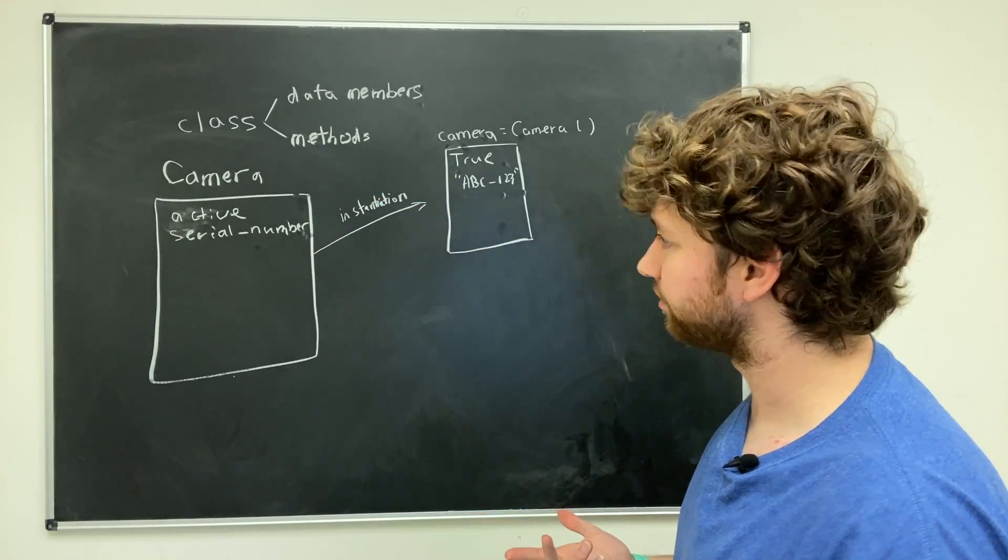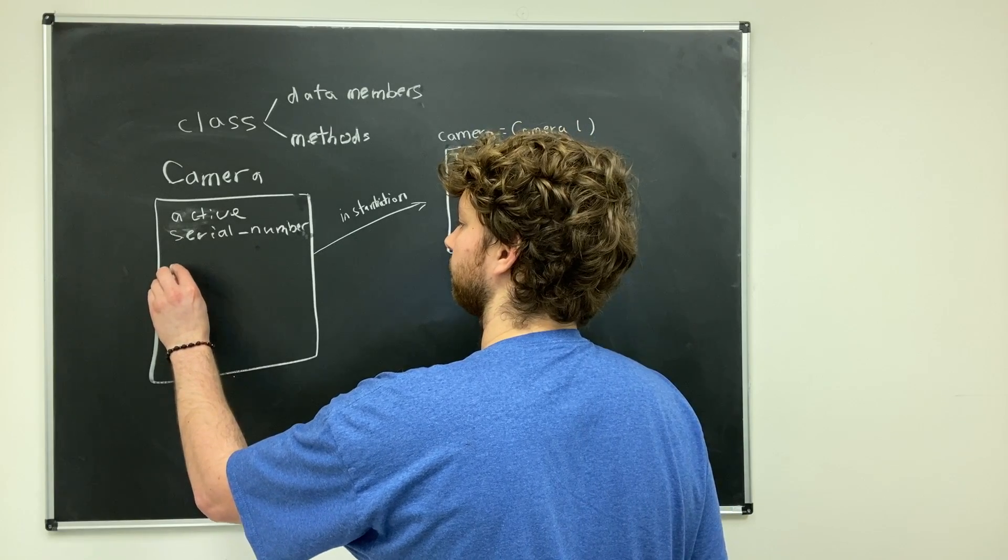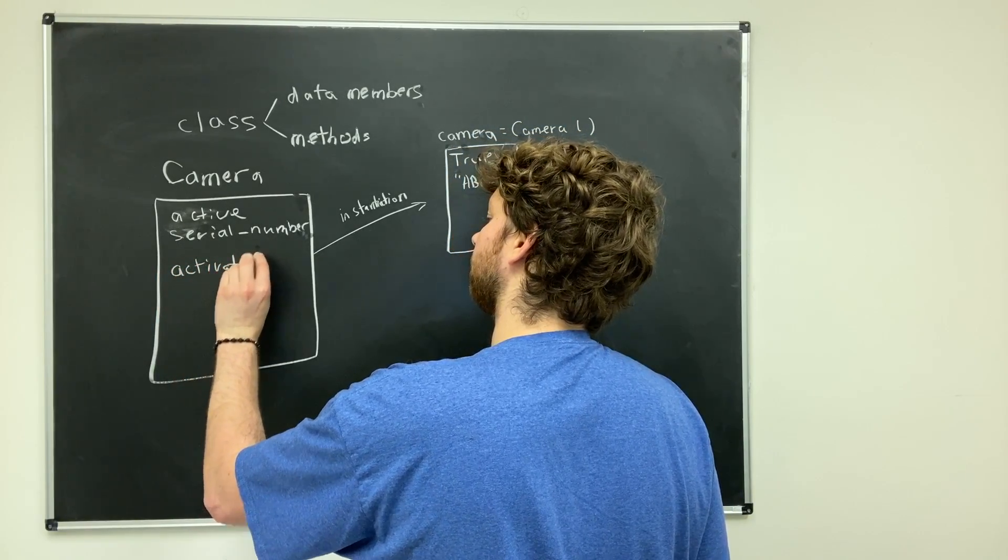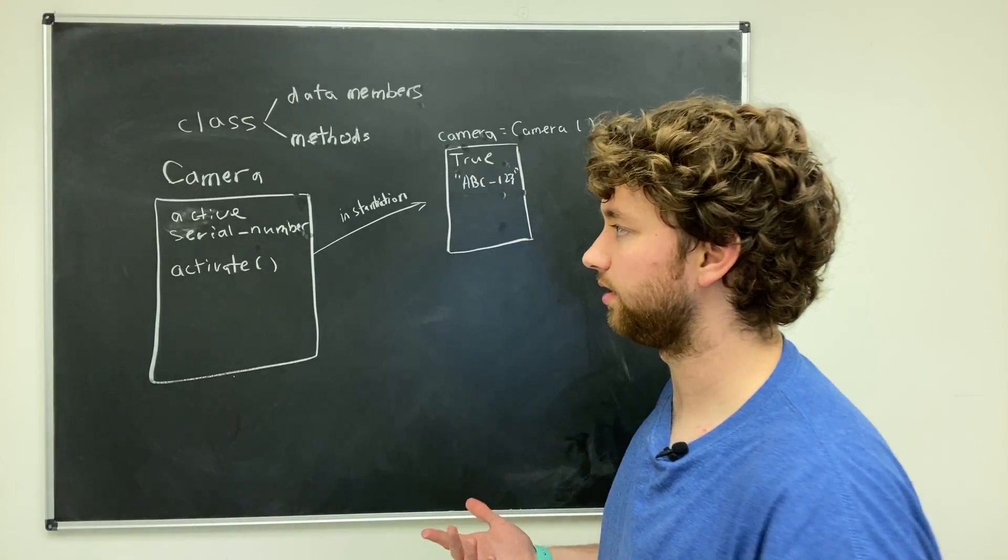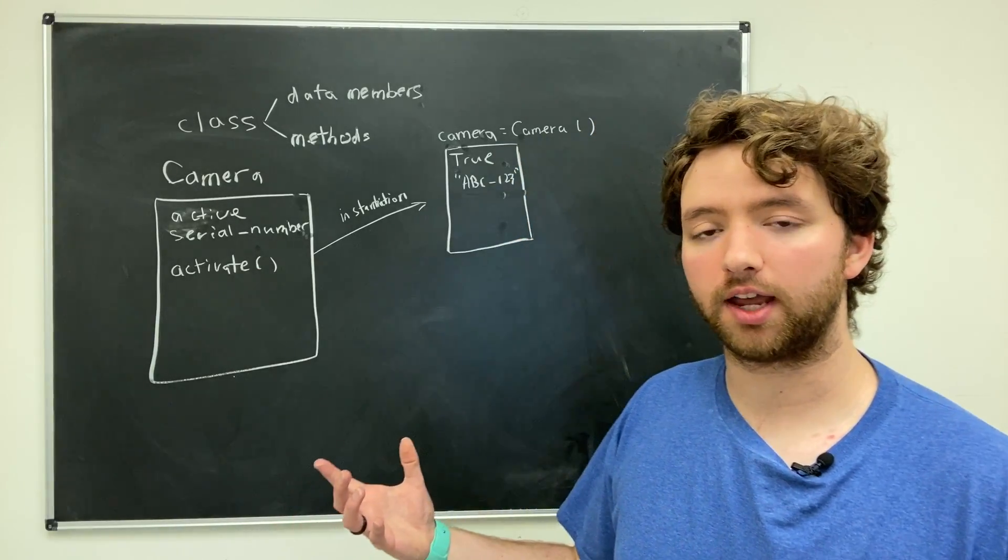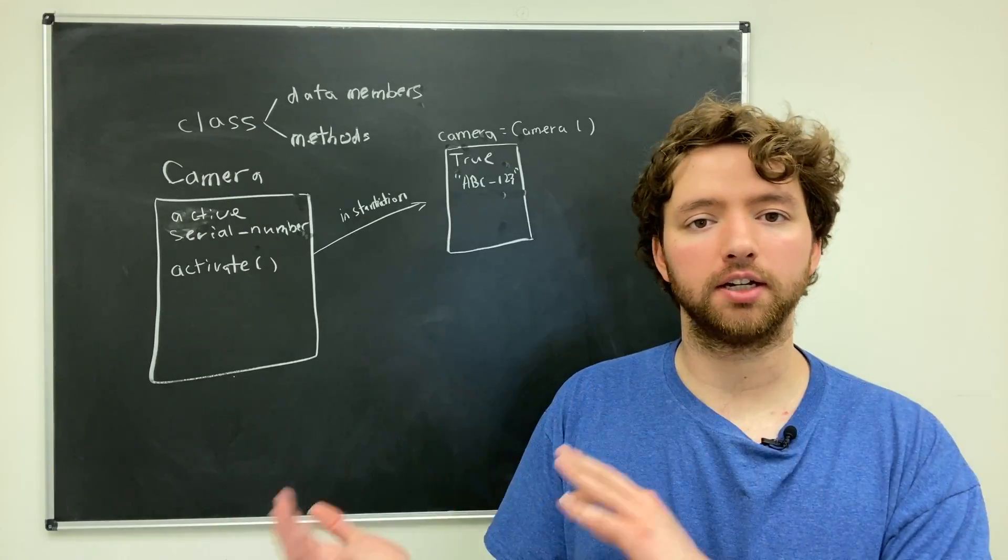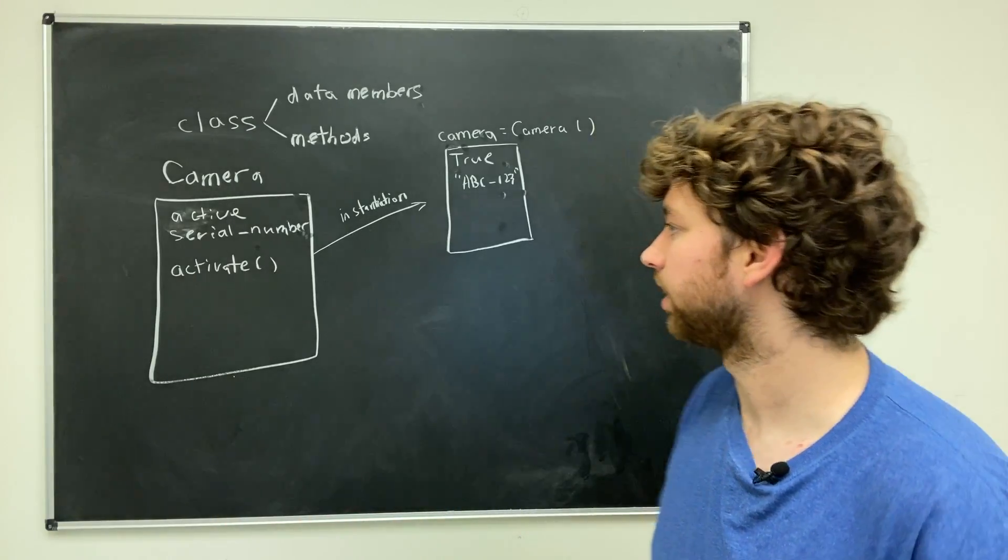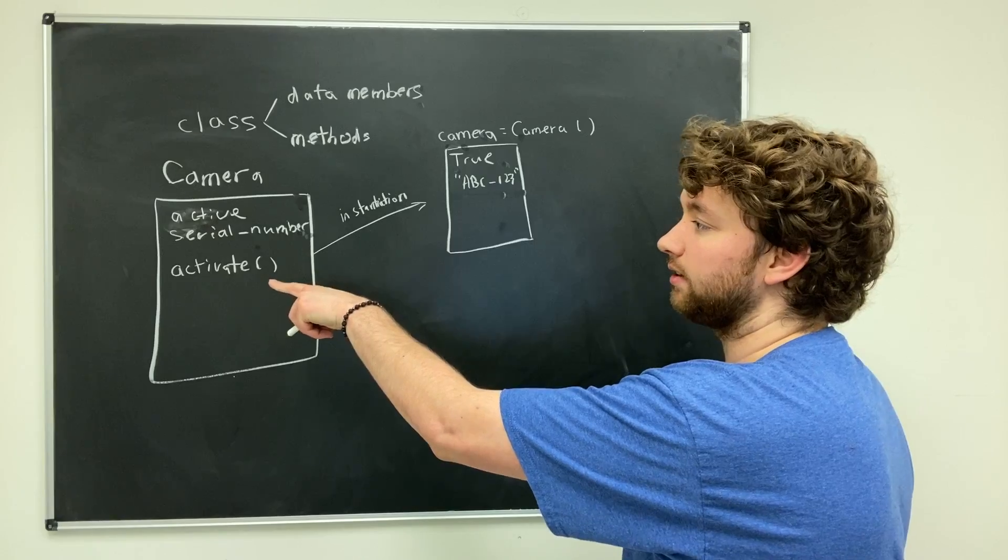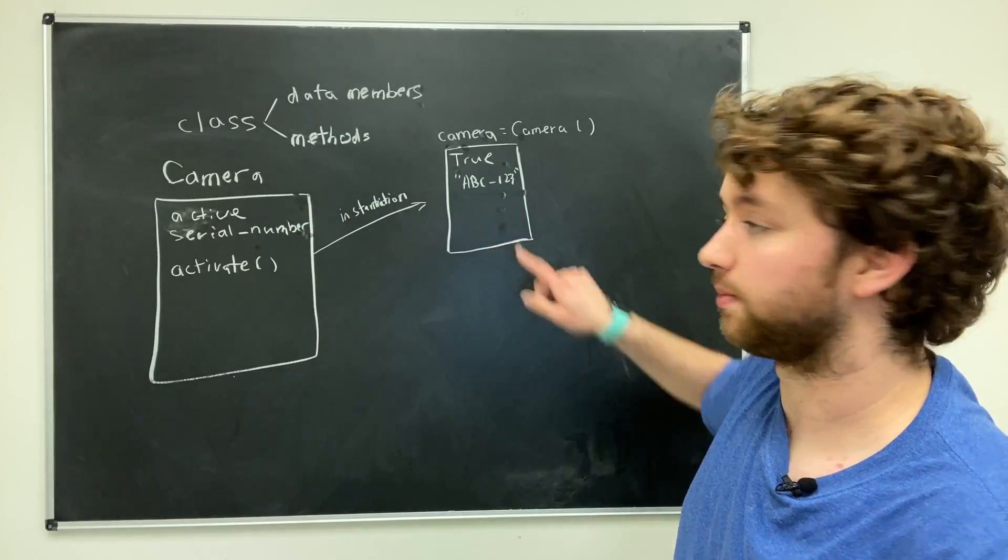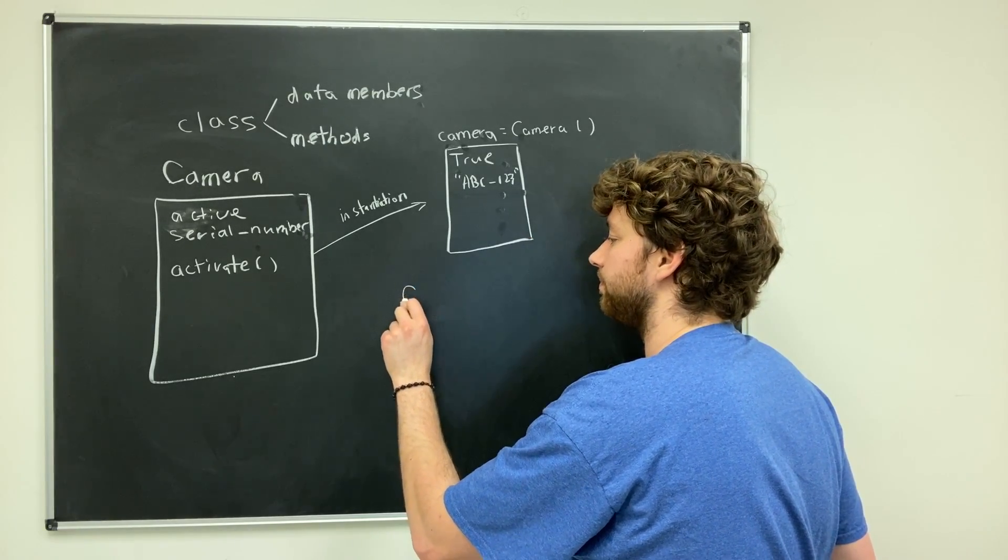Next thing on here we have methods. Methods are just functions. An example might be activate, and in this situation it would turn the camera on, maybe start any of its paths it has looking, whatever it might be.